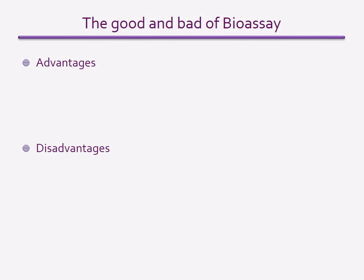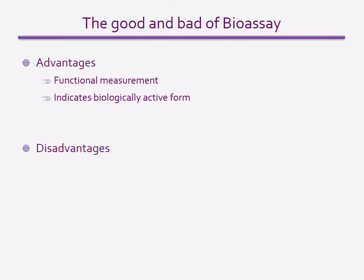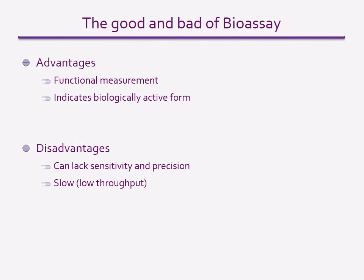This slide summarizes the properties of bioassays. The advantage of this type of assay is that it measures a biological activity — it is the only type of assay that can tell you if a compound binding to a receptor can influence a biological pathway that leads to a cell or tissue response. The disadvantages are that compared with binding and reporter gene assays, bioassays tend to be less sensitive, more variable, slower and more limited in the number of samples that can be tested.